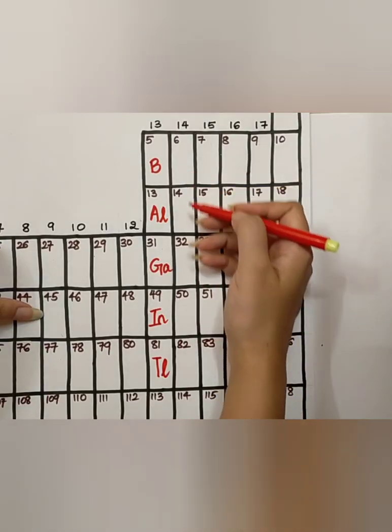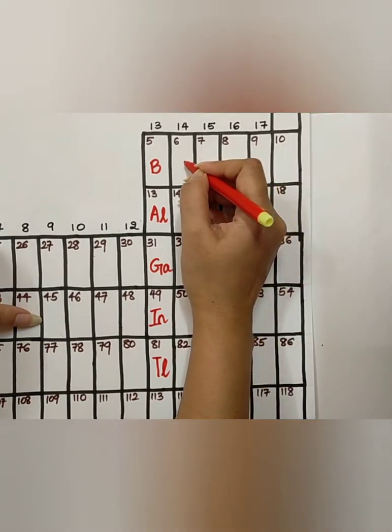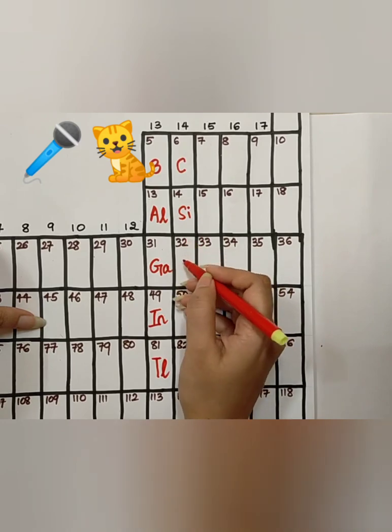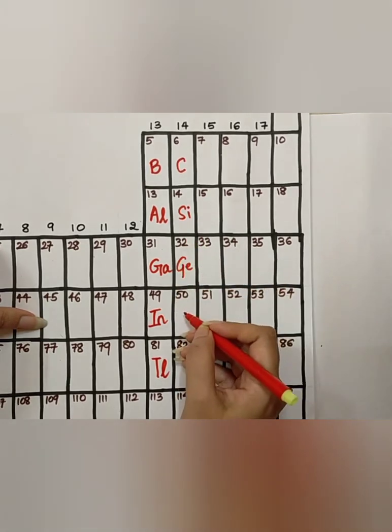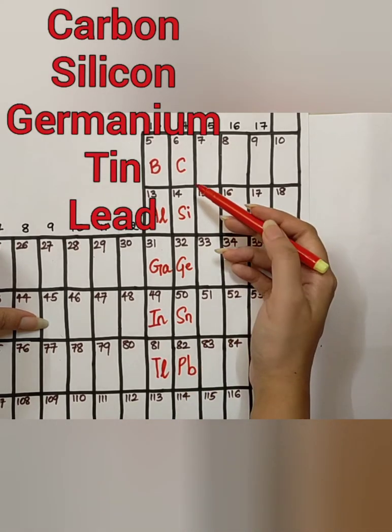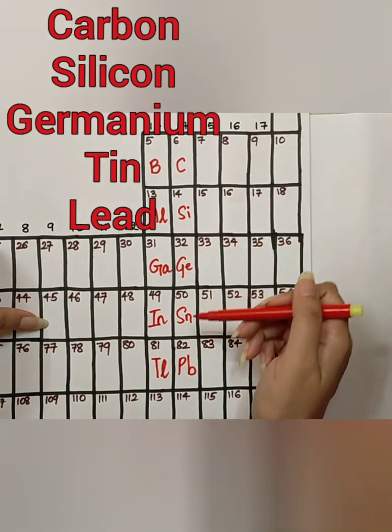For group 14, you have to remember this sentence. So the elements are, Carbon, Silicon, Germanium, Tin, Lead.